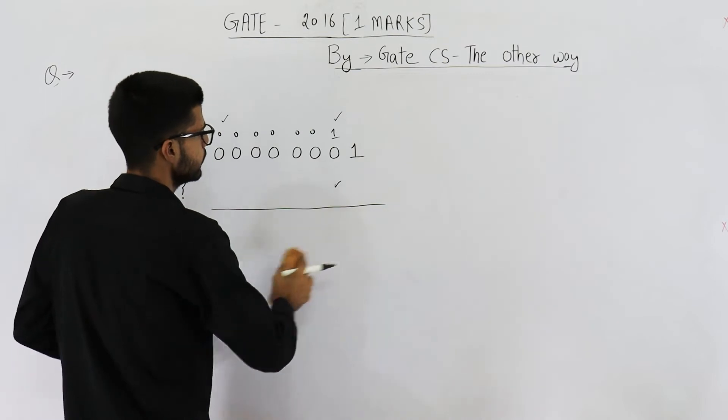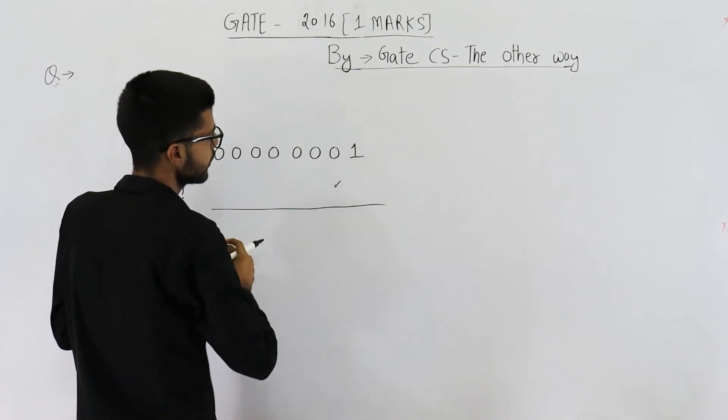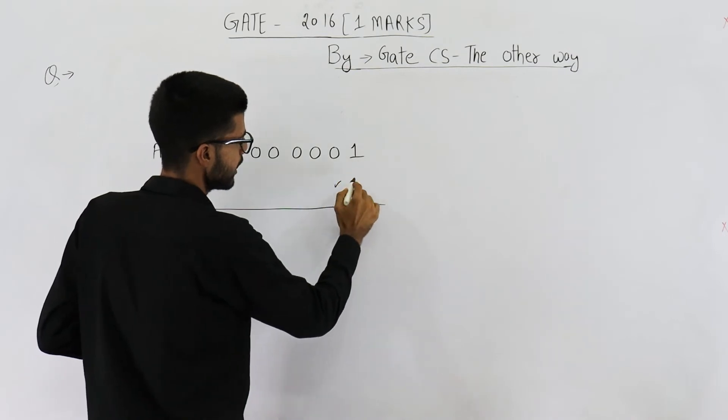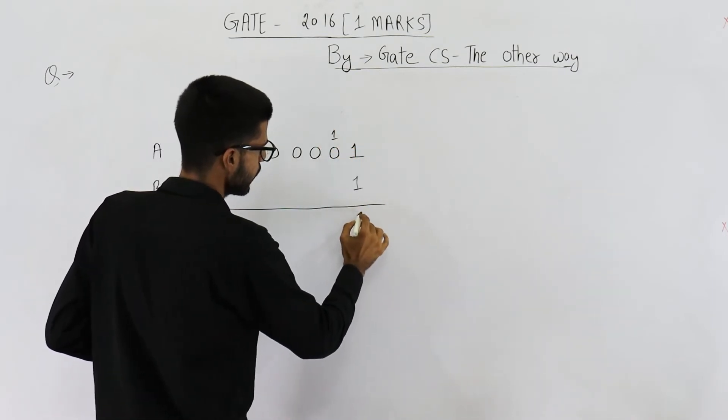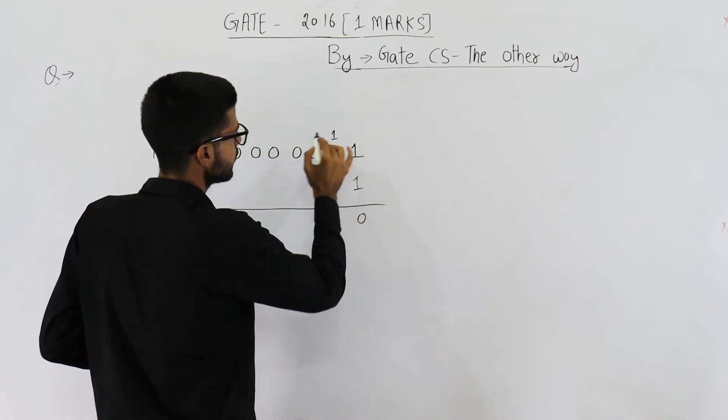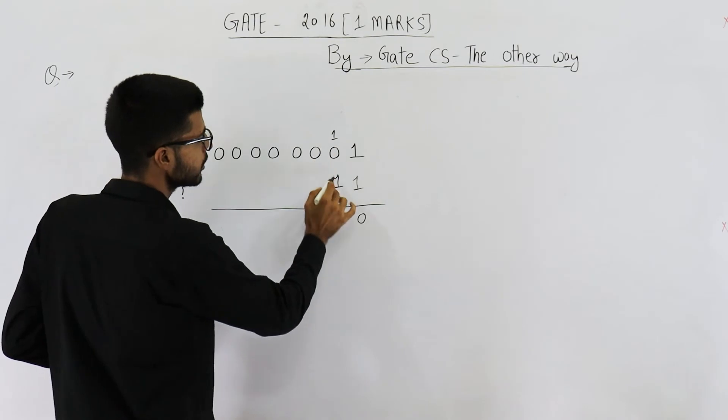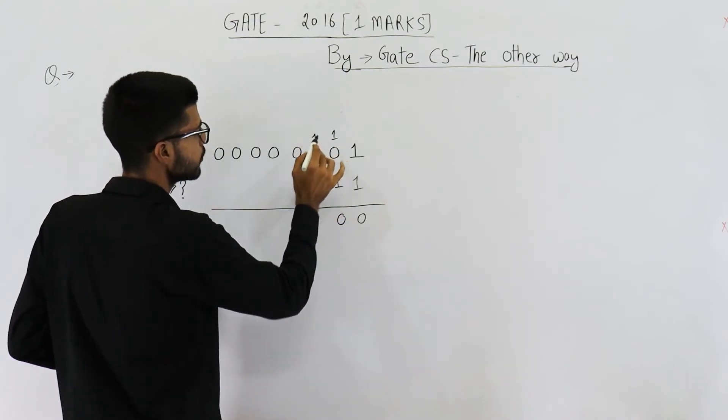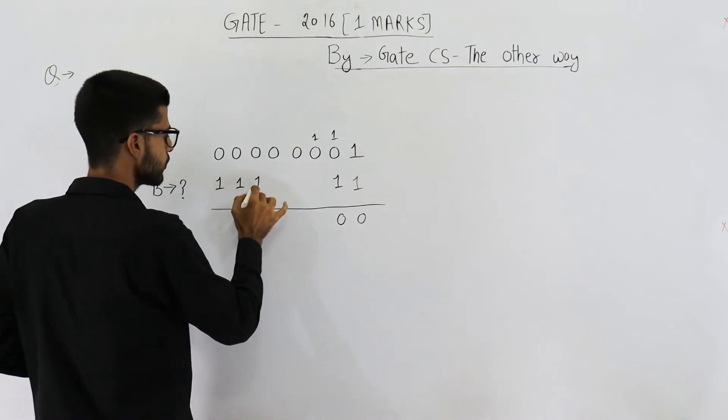So, you can see. We want a carry from these two bits. That means this one has to be 1. We will get a carry 1. 1 plus 1 is 0 and the carry will be 1. This bit also has to be 1. 1 plus 1 is 0 and the carry will be 1. Similarly, you can see B will be all 8 bits high.